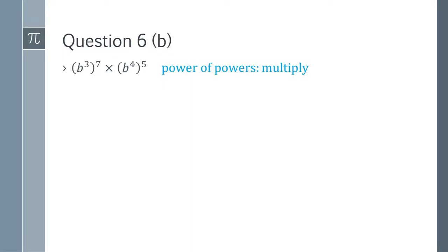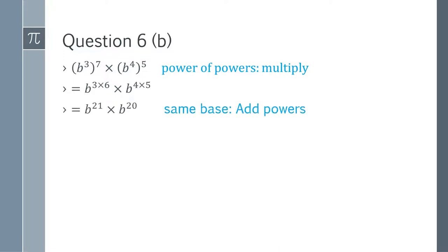Question 6b: (b^3)^7 multiplied by (b^4)^5. Apply power of power: b^(3×7) = b^21 and b^(4×5) = b^20. Then add the powers: b^(21+20) = b^41. That is the answer for question 6b.